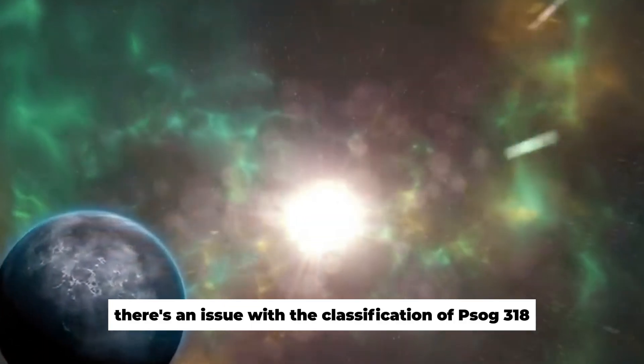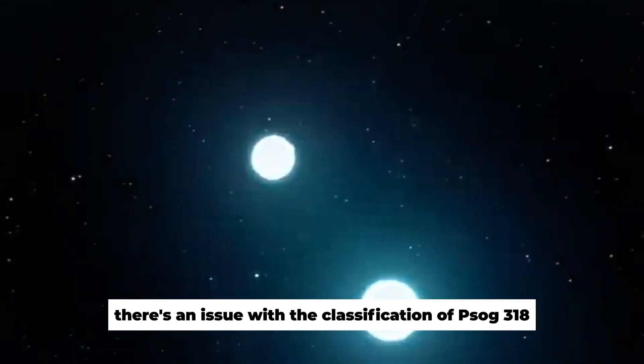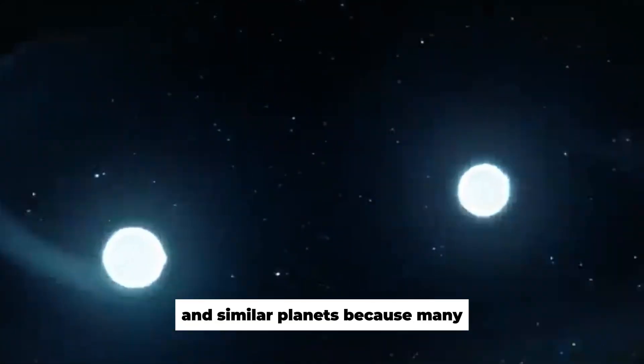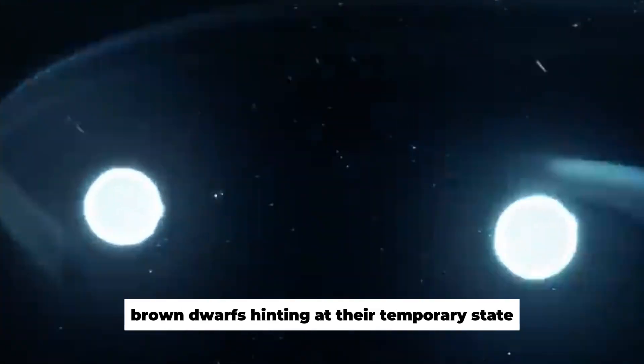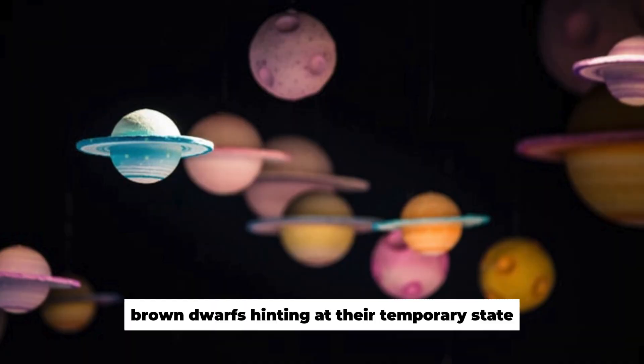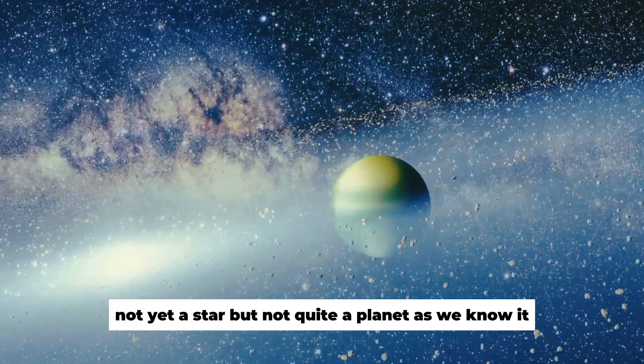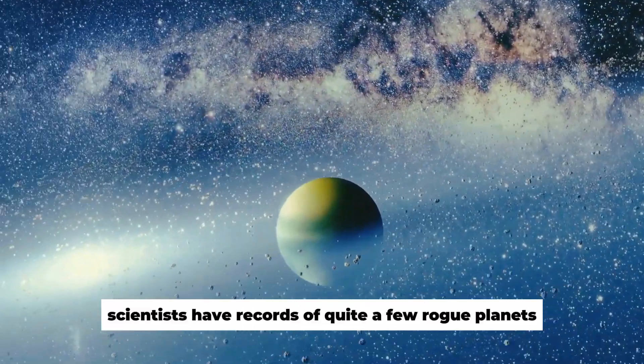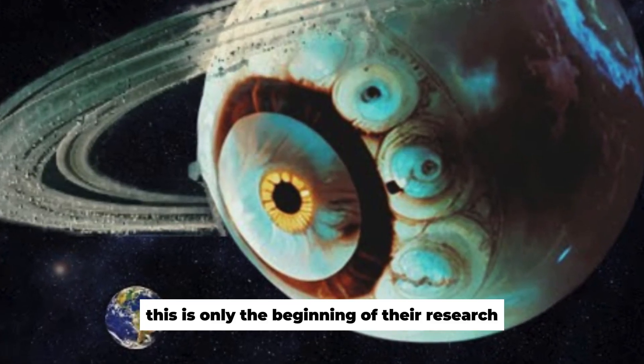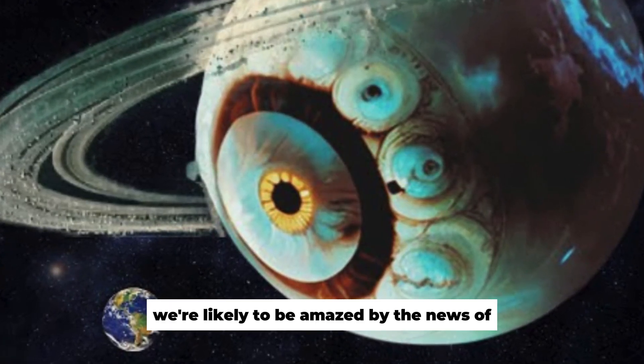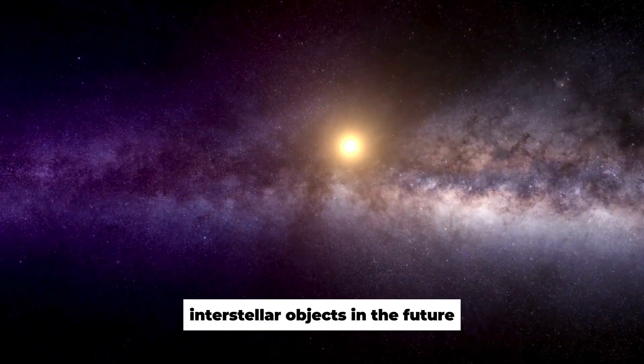As a result, there's an issue with the classification of PSOG 318 and similar planets, because many scientists tend to refer to such objects as sub-brown dwarfs, hinting at their temporary state. Not yet a star, but not quite a planet as we know it. Although scientists have records of quite a few rogue planets, this is only the beginning of their research. We're likely to be amazed by the news of the properties of these incredible interstellar objects in the future.